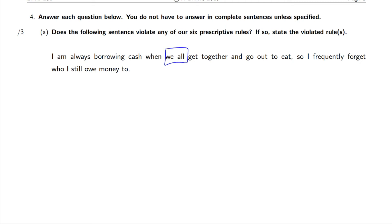Well, the first bit is fine. You might be thinking, well, what is this we all going on here? But we is plural and all is plural, so this is fine. It's the second bit that's more problematic for our prescriptive rules, so I frequently forget who I still owe money to. Here we see a preposition dangling at the end of a sentence, so this is going to be one of our rules broken. Do not end sentences with prepositions. And because we have a preposition dangling at the end of a sentence, we're probably going to have a violation with the who and whom rule too, which we see here. So how should we be rephrasing this? Well, this should be whom.